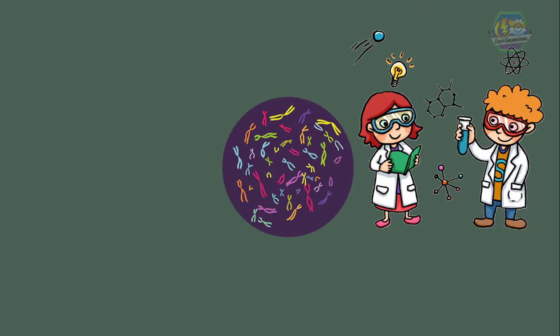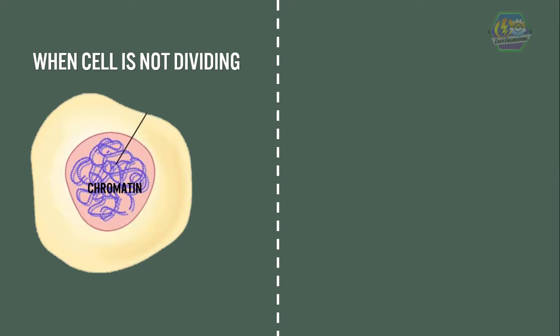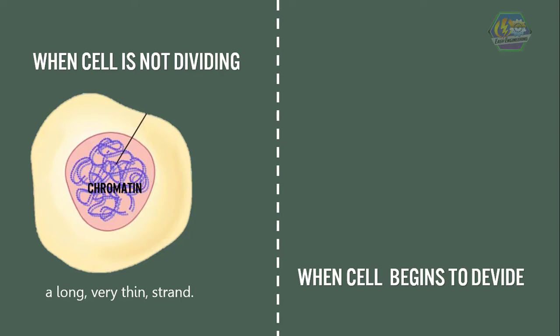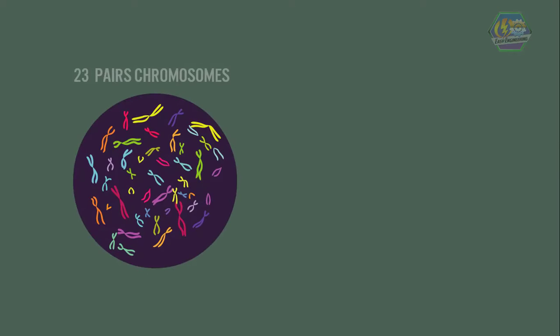These chromosomes look like short little worms in pairs. When a cell is idle or not dividing for cell duplication, the chromosome is in its chromatin form — a long, very thin strand. When the cell begins to divide, that strand replicates itself and winds up into shorter tubes.